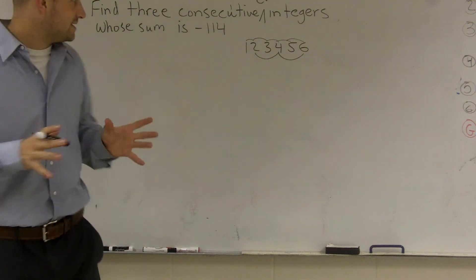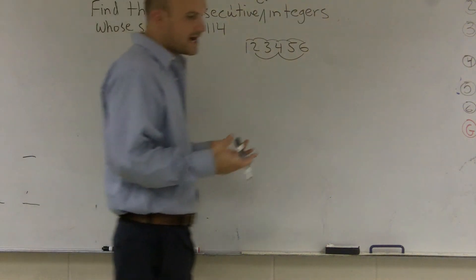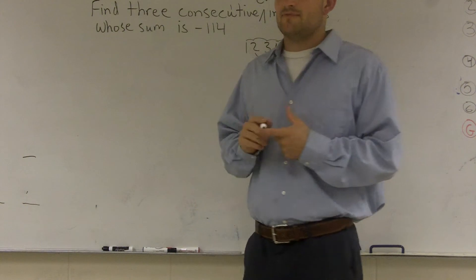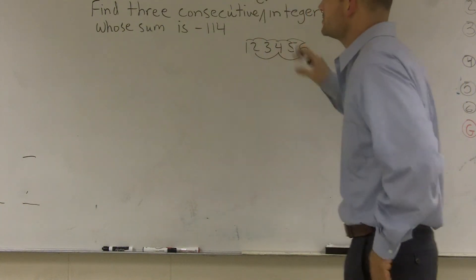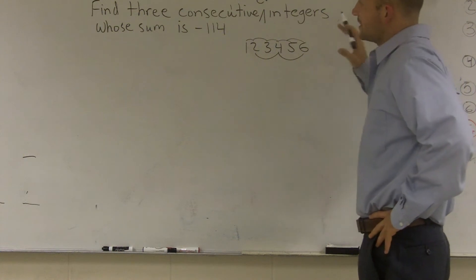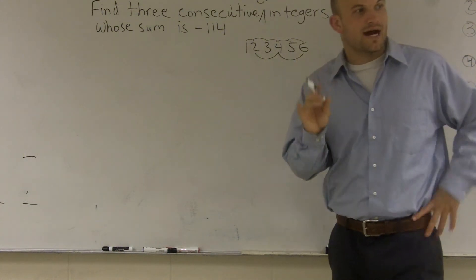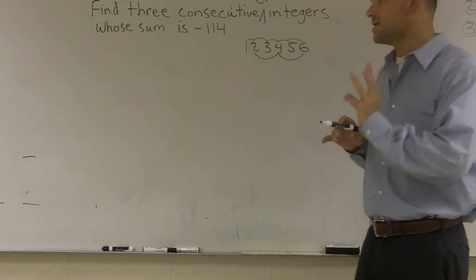So what the problem is asking is I need to find three numbers. Now, when we're doing a word problem, we need to make sure we understand first what the question is asking. This says we need to find three consecutive even numbers. That means my answer, I'm going to have to have three even numbers.